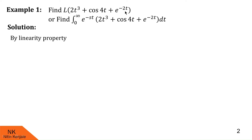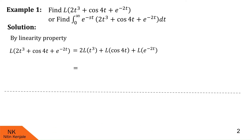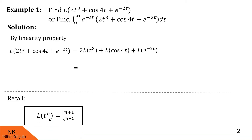We want Laplace of this function. Using linearity property, we can write it as 2 times Laplace of t³, plus Laplace of cos4t, plus Laplace of e^(−2t). Now let us find out Laplace of these functions one by one. First, Laplace of t³. For that, I will recall Laplace of t^n, which is Γ(n+1) / s^(n+1). Here n is 3.